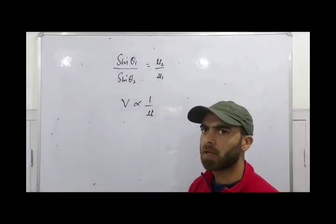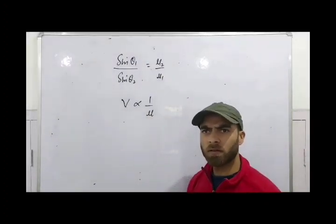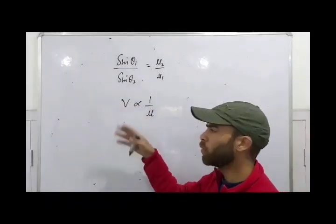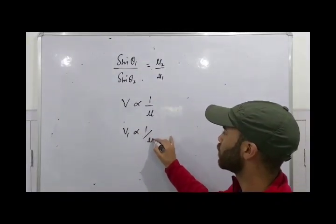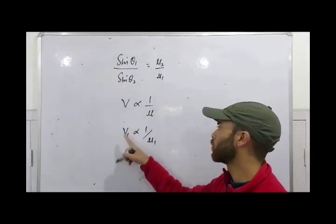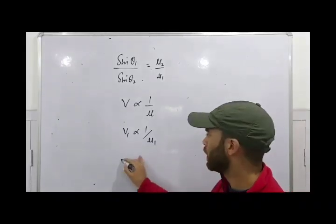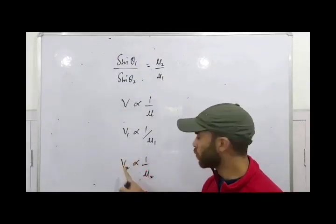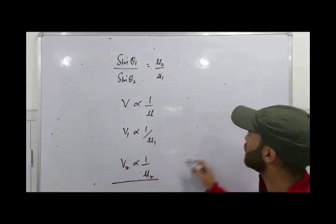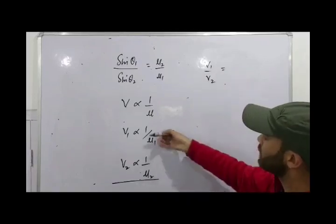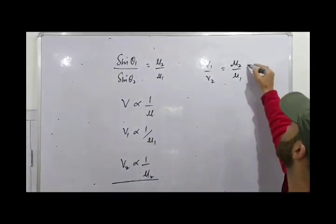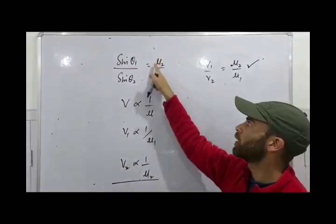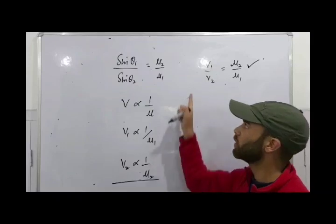The velocity of light in any medium is inversely proportional to the refractive index of that medium — the greater the refractive index, the lower the velocity. You should have also learned this in 10th class. So for two media, we can write: v1 is inversely proportional to mu one, and v2 is inversely proportional to mu two. Dividing these, v1 divided by v2 equals mu two divided by mu one, which equals sin theta one divided by sin theta two.